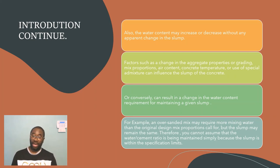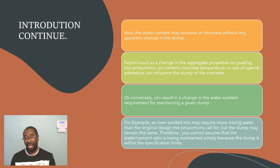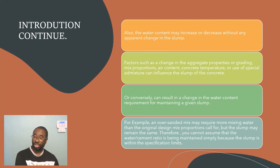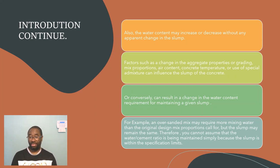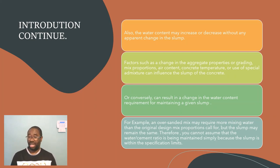For example, an over-sanded mix may require more mixing water than the original design mix proportion that was needed, but the slump may remain the same. Therefore you cannot assume that the water-cement ratio is being maintained simply because the slump is within the specification limit.